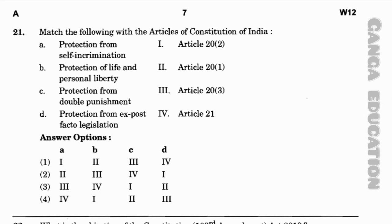Question number 21: Match the following with the Articles of the Constitution of India — (A) protection from self-incrimination, (B) protection of life and personal liberty, (C) protection from double punishment, (D) protection from ex post facto legislation — with: (1) Article 20 Clause 2, (2) Article 20 Clause 1, (3) Article 20 Clause 3, (4) Article 21.